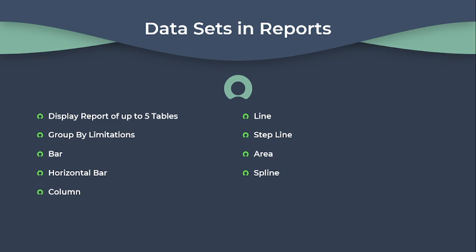The following report types support multiple data sets: bar, horizontal bar, column, line, step line, area and spline. Multiple group bys are not supported on multiple data sets. While using multiple data sets, the report legend is always displayed. That covers data sets in reports.